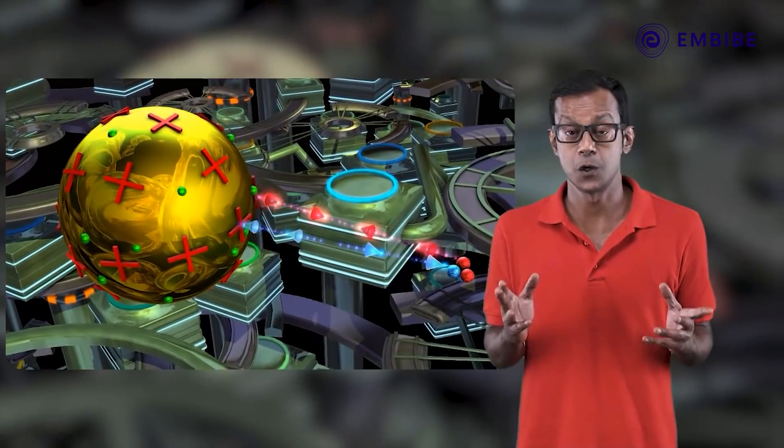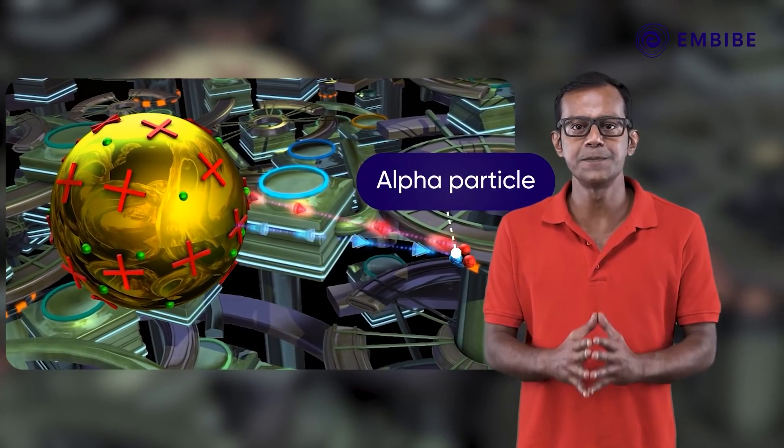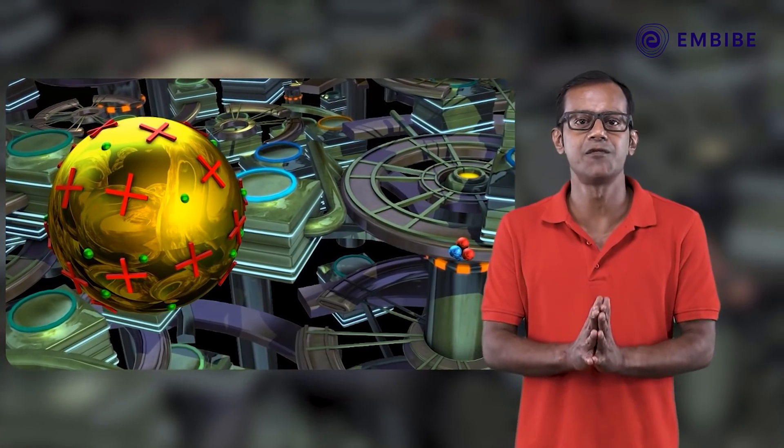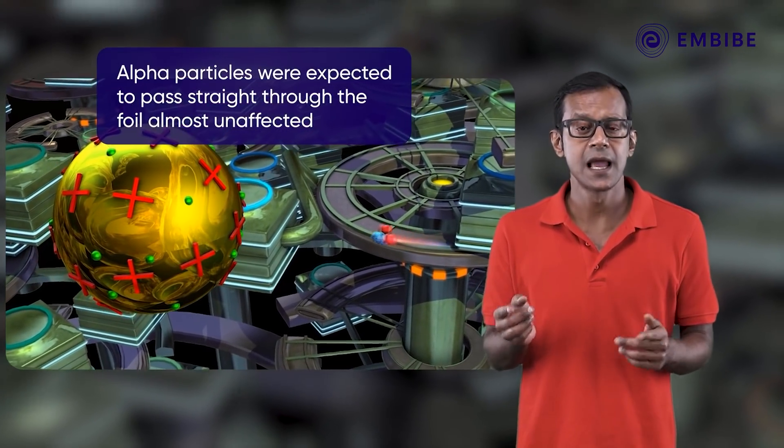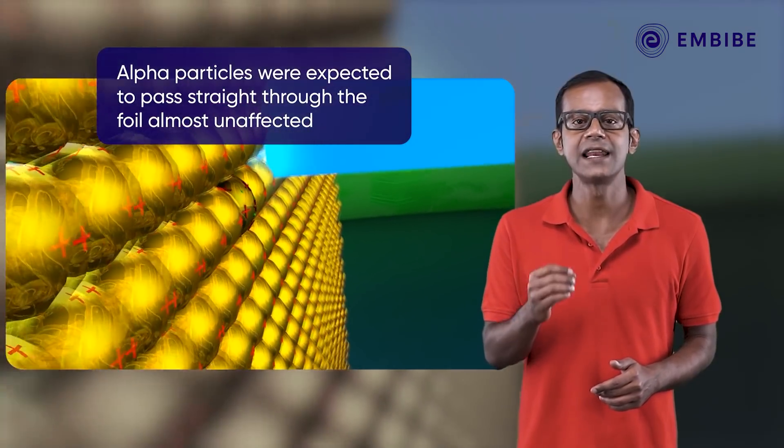So it was expected that the alpha particles would hardly experience a significant net force from these charges and would pass straight through the foil almost unaffected.